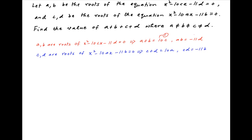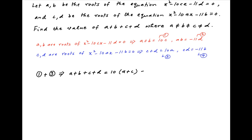Let's call these results 1, 2, 3, and 4 respectively. Now, adding results 1 and 3, we get a plus b plus c plus d equals 10 times (a plus c), which implies that b plus d equals 9 times (a plus c). Let's call this result 5.